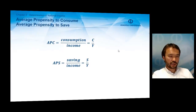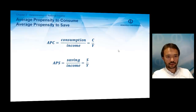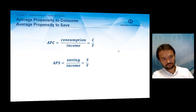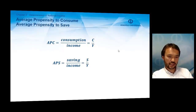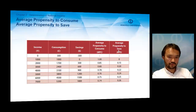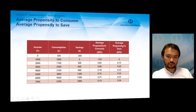The other concepts are average propensity to consume (APC) and average propensity to save (APS), which show the ratio of consumption to income and savings to income at a given income level. Here we can see the APC rate for each income level, and the APS for each income level, showing that at each income level we have different average propensity to consume and average propensity to save rates.